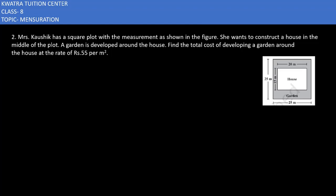So first of all, you have to find the area of the garden. How will you calculate the area of the garden? You'll take the outer area, which is the area of the square plot, and subtract it from the area of the house.